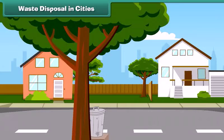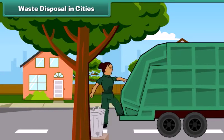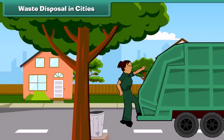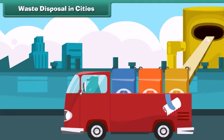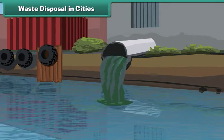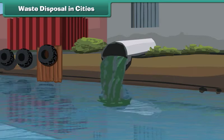Let us understand how waste is disposed of in cities. Waste from our homes is first collected and treated in municipal sewage treatment plants, and only then disposed of into water bodies like rivers. Waste treatment ensures that rivers are not polluted.